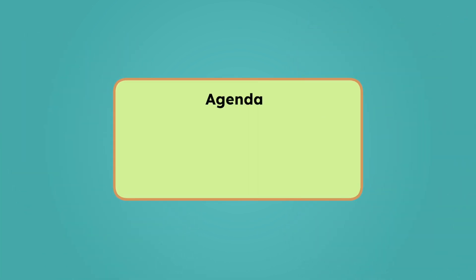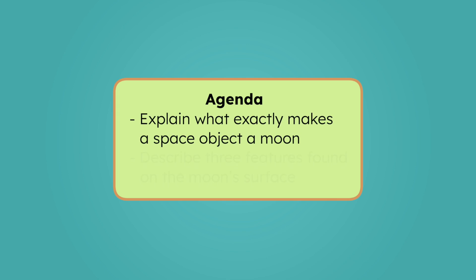By the end of today's lesson, you'll be able to explain what exactly makes a space object a moon and describe at least three features found on the surface of our moon. Let's investigate.